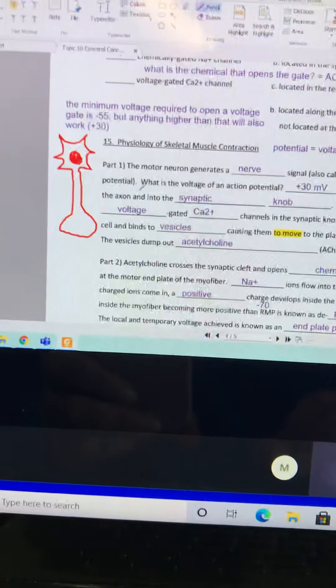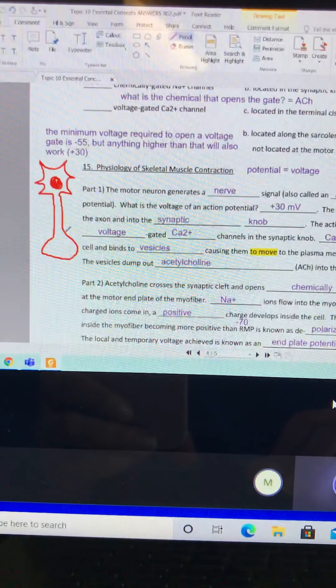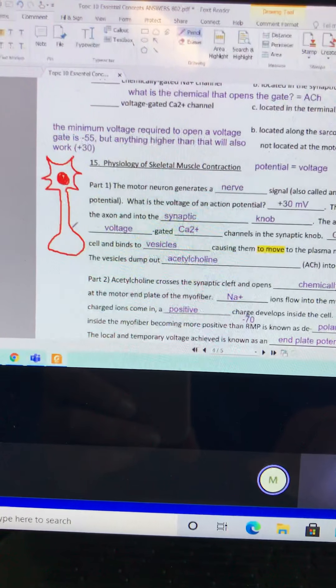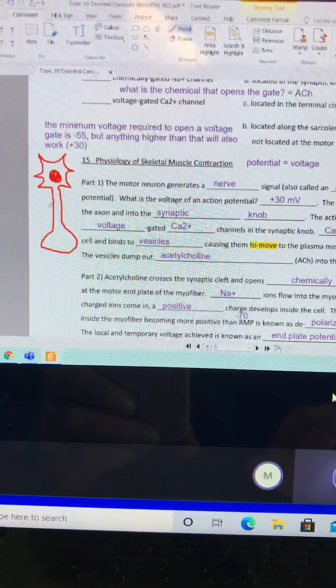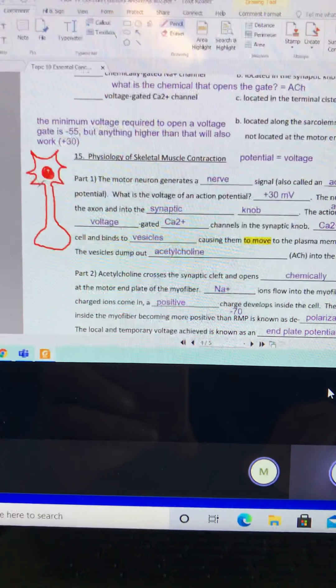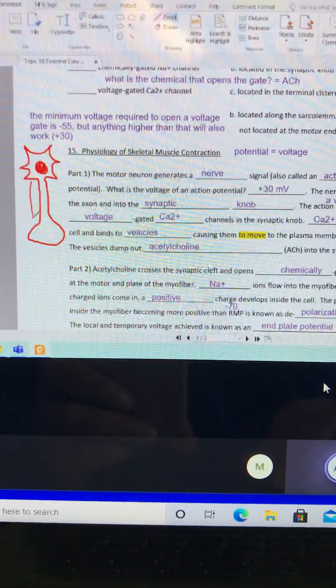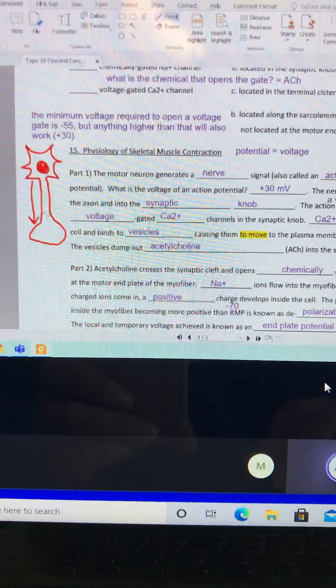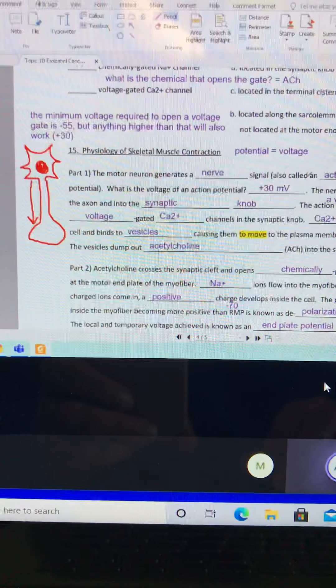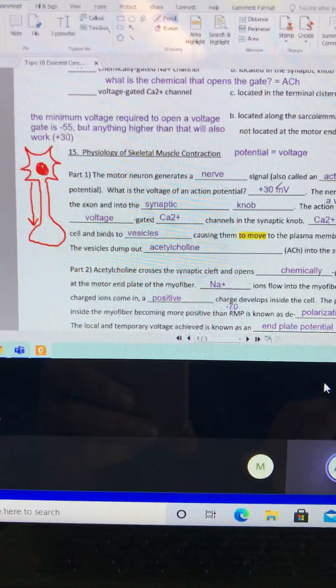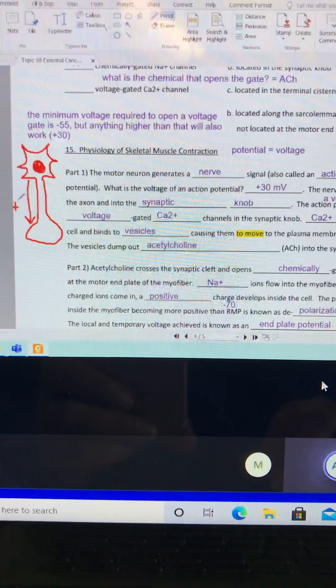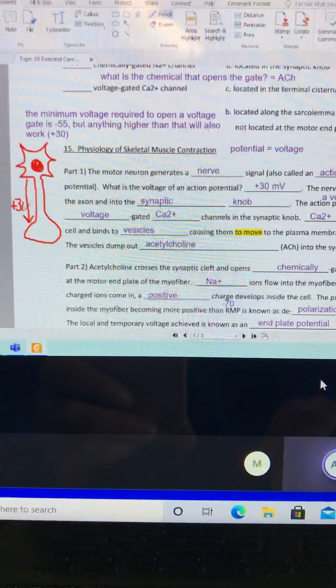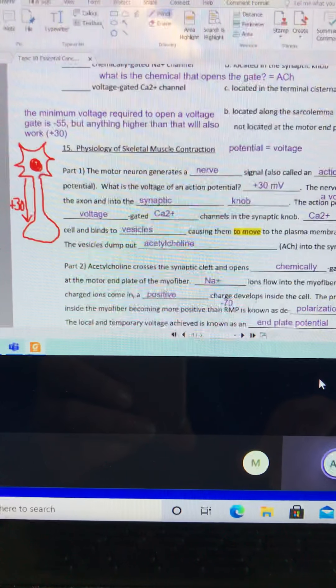Remember that when this cell was resting before it was sending that signal, its voltage was minus 70 at rest. But when it sends that signal, the signal travels down the axon towards the synaptic knob. That nerve signal, that action potential, is a voltage of plus 30. So it was like minus 70 all along that axon.